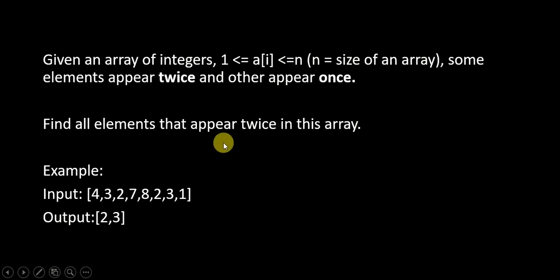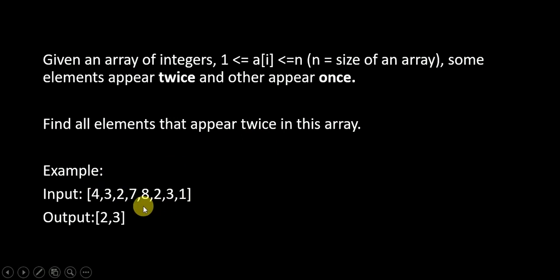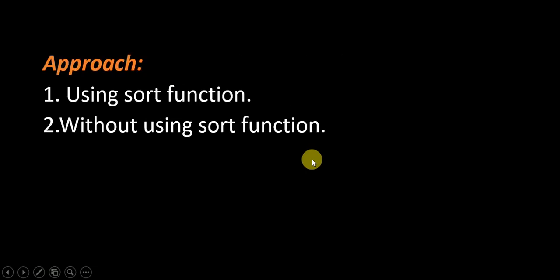Some elements appear twice and others appear once. Find all elements that appear twice in this array. For example, given the array 4 3 2 7 8 2 3 1, we can clearly see that 3 appeared twice as well as 2, therefore we return 2 and 3. We will solve this problem using two approaches: using sort function and without using sort function.